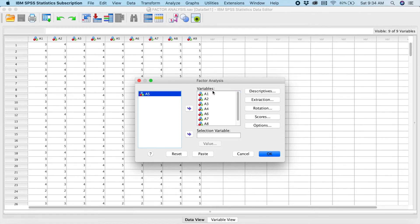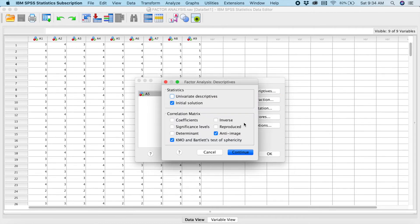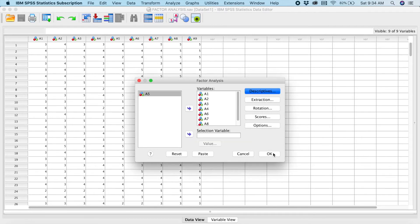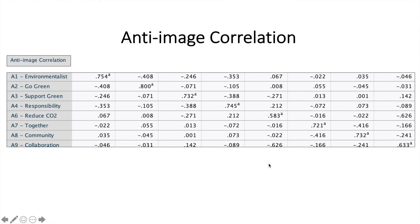As we have done the rest earlier, it will be the same here, so we just don't have to do anything different. Click OK. You can see I have deleted item A5, and if we check all the diagonal values again, all the values are greater than 0.5.